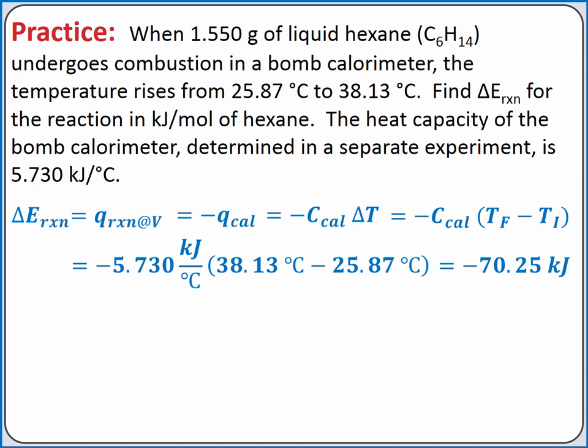We are asked for the change in internal energy for the reaction in kilojoules per mole of hexane. But we didn't use one mole of hexane in this problem. We used 1.550 grams of hexane. So we'll need to use dimensional analysis to get the correct units. We'll start our dimensional analysis with negative 70.25 kilojoules per 1.550 grams of hexane.